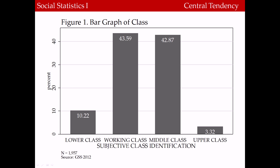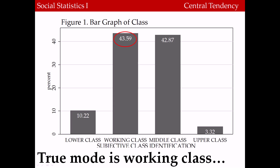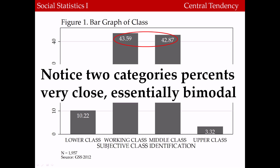Take a look at the following bar graph. It shows the distribution for the variable social class. We can see that 43.59% of the distribution consider themselves to be working class, which is the highest frequency of all the categories. However, there's another category, middle class, that's very close to the true mode at 42.87%. Therefore, we would say that this distribution is essentially bimodal, and we would report both. To interpret this, we would say that most people consider themselves either to be working class or middle class.